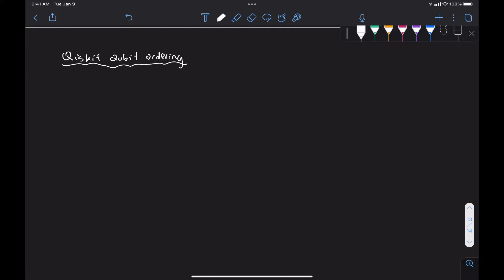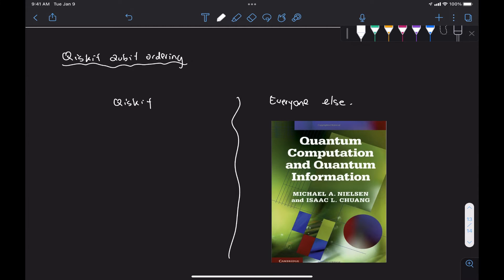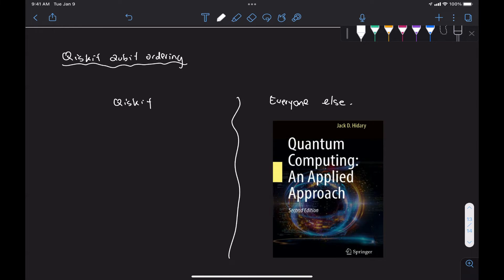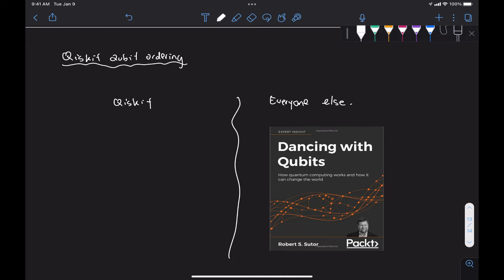And by everyone else, of course, I mean every reference I've come across with. So for example, textbooks like David Mermin's or Nielsen and Chuang or Jack Hidary's, even Robert Sutor's textbook. And he's from IBM, even his textbook uses this other notation, not the one using Qiskit.